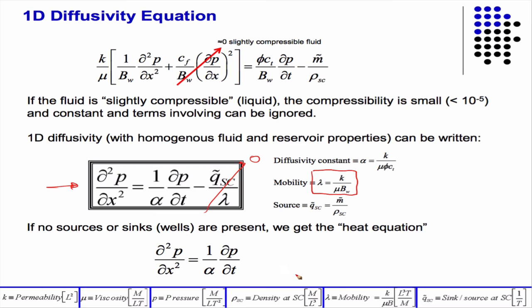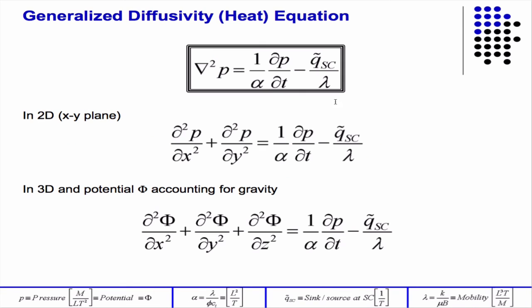So, if I just replace the P with a T, and then this becomes the thermal conductivity. Then I can model heat transport with the same equation.